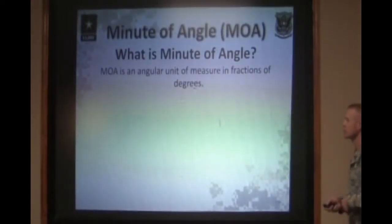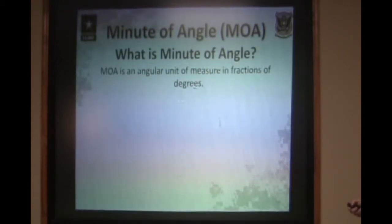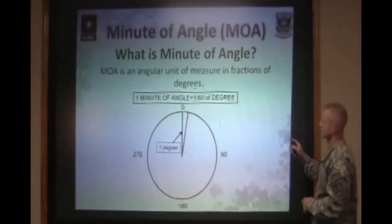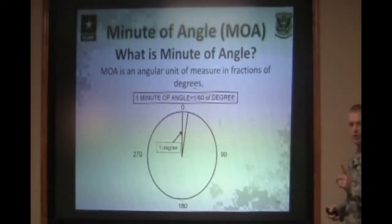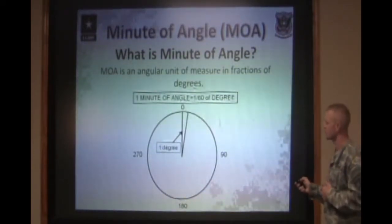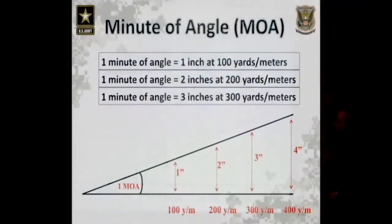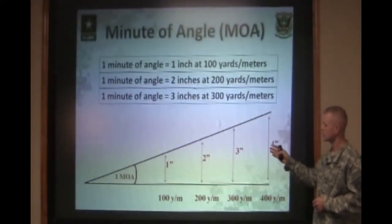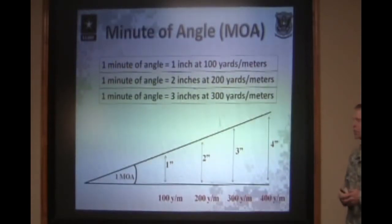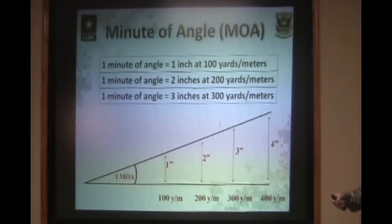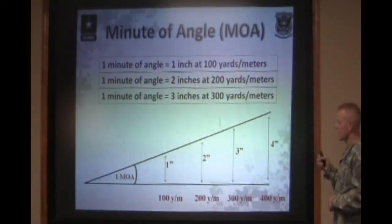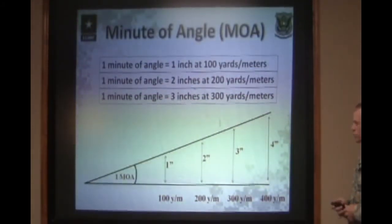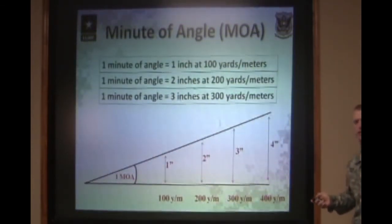So what is a minute of angle? It's an angular unit of measure — a fraction of a degree. One minute of angle is nothing more than one-sixtieth of one degree. You have 360 degrees in a circle — one-sixtieth of one degree is one minute of angle. As it pertains to a shooter, one minute of angle equals one inch per 100 meters. So one minute of angle equals one inch at 100 yards or meters, two inches at 200, three inches at 300, and so forth, all the way to ten inches at 1000. All of those measurements are still one minute of angle. Each click on your sight system either moves a half minute of angle or a full minute of angle depending on which direction you're moving in.